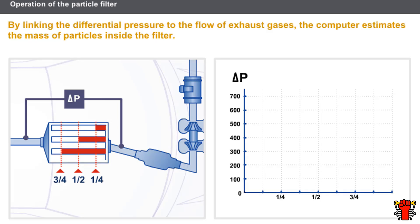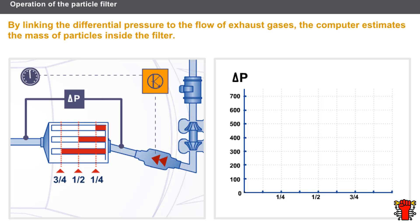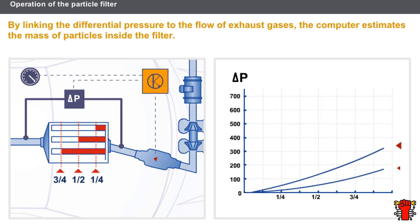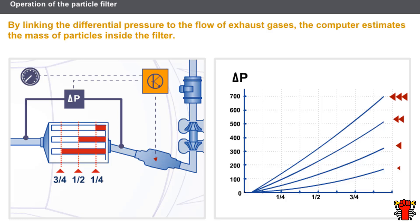The differential pressure alone cannot determine the particle mass. In fact, the differential pressure is linked to the flow of gas inside the exhaust pipe. The computer calculates the exhaust gas flow volume in relation to the engine speed and other parameters. By linking the differential pressure to the flow of exhaust gases, the computer estimates the mass of particles inside the filter.